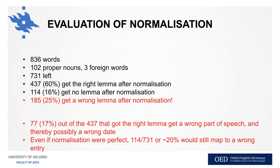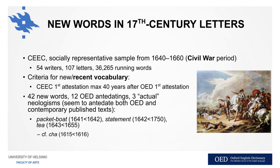Even if normalization were perfect, 20% would still map to a wrong entry because we mapped to the earliest entry, and in cases of different part of speech or zero derivation we possibly get a wrong date. The conclusion is we are definitely not finished and there are lots of types of neologisms we're not able to catch — our automated filtering and processing just aren't good enough yet. But let's go through the actual neologisms we did find in this case.